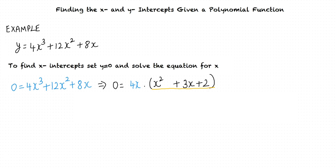Expressing the quadratic term x² plus 3x plus 2 as a product of its factors, we get 4x times (x plus 2) times (x plus 1) equals 0. We have 4x equals 0, which implies x equals 0.